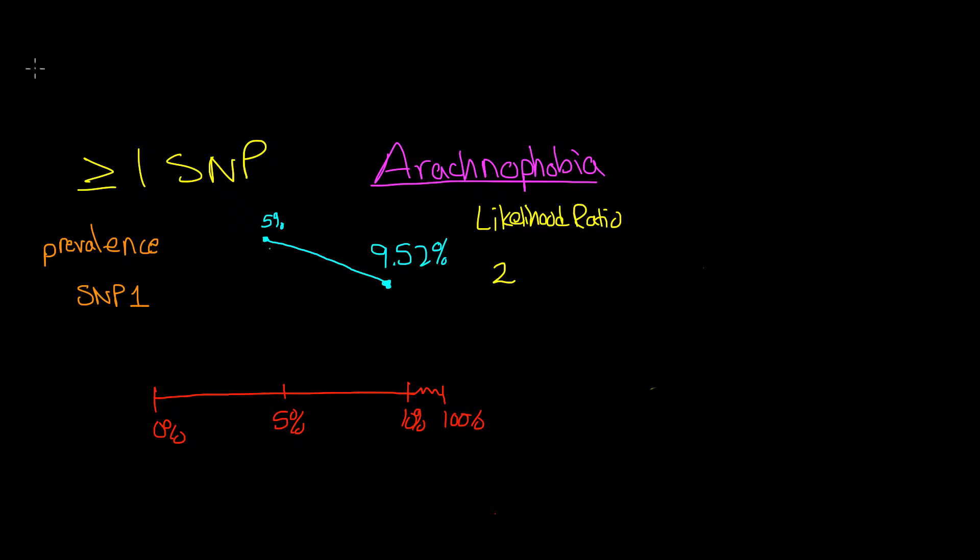In this video, we're going to continue our discussion of the riskogram. And as we said last time, the riskogram is a way to visualize this information on SNPs and how SNPs can contribute to disease.